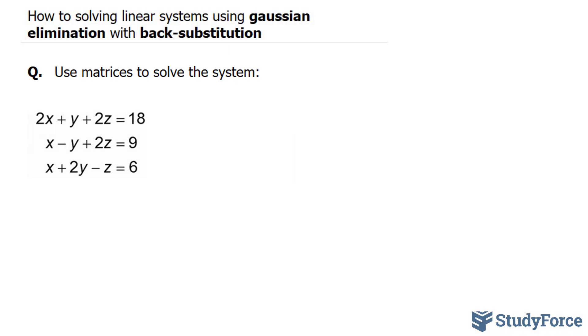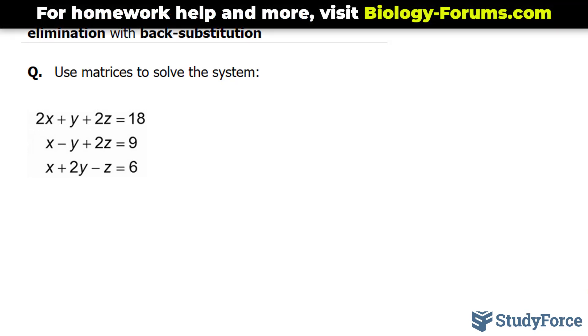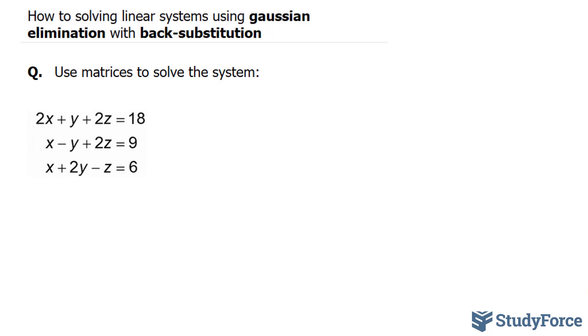The first thing that you have to do here is write this as an augmented matrix. An augmented matrix is simply a matrix that represents the leading coefficients and the constants of the equations. Our augmented equation will be 3 by 4 and it will look like this: 2, 1, 2, and 18.